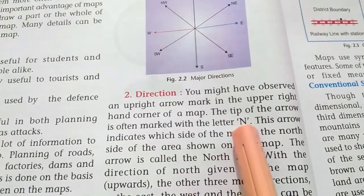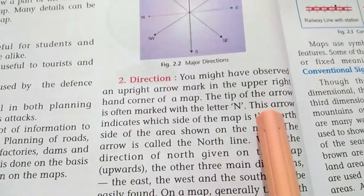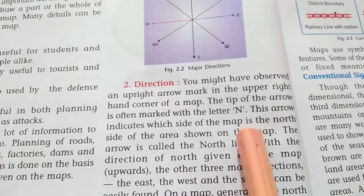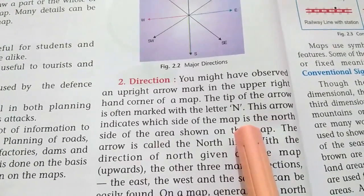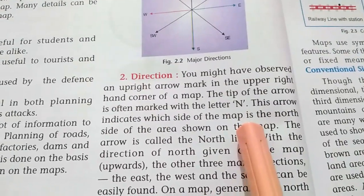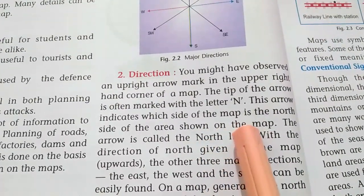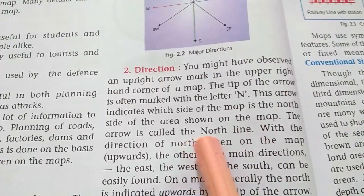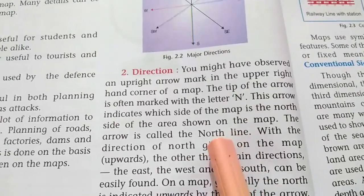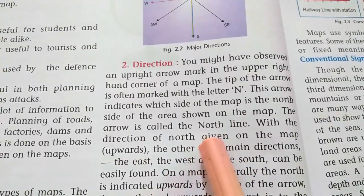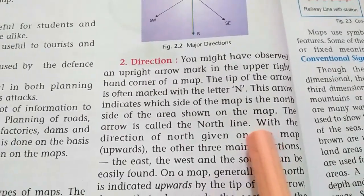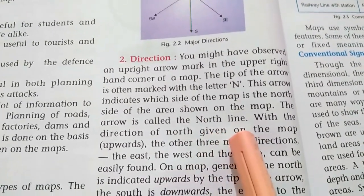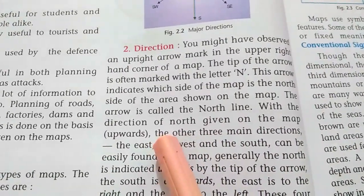Directions: An arrow on the map shows which side is the north side of the area shown on the map. This arrow is called the north line. With the direction of north given, which points upward on the map, the other directions can be found.